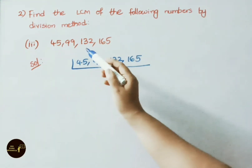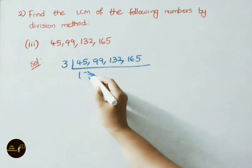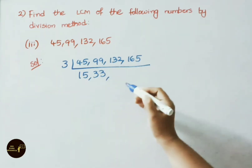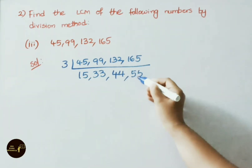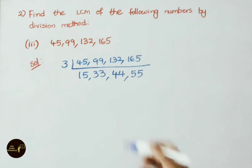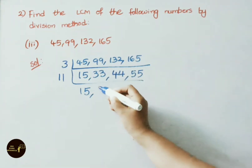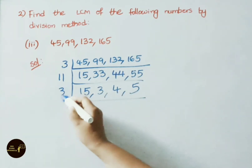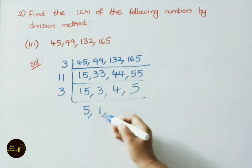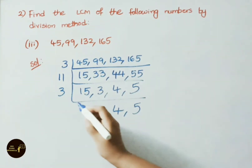Third sum: find LCM for 45, 99, 132 and 165 using division method. Divide by 3: 3 × 15 = 45, 3 × 33 = 99, 3 × 44 = 132, 3 × 55 = 165. Now divide by 11: 15 is not present, write same. 11 × 3 = 33, 11 × 4 = 44, 11 × 5 = 55. Divide by 3: 3 × 5 = 15, 3 × 1 = 3. 4 and 5 are not present in 3 table, write same numbers.